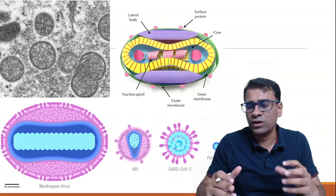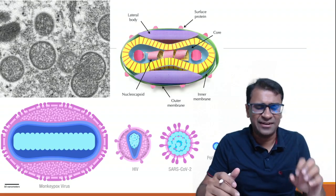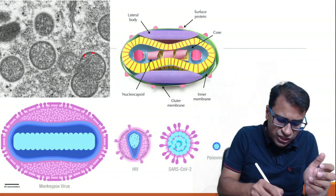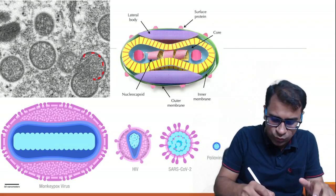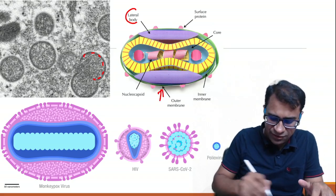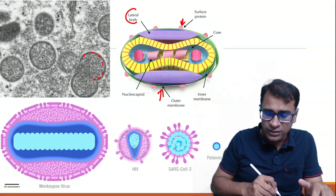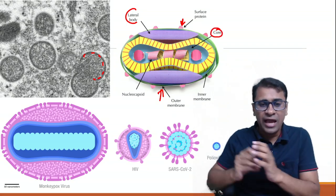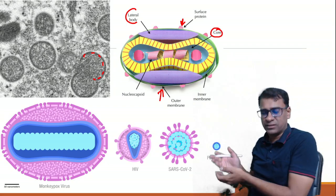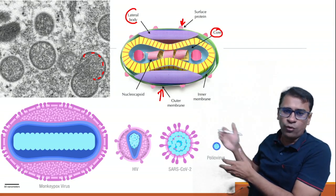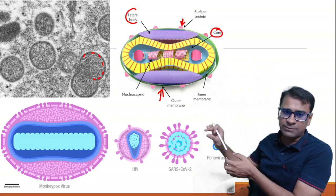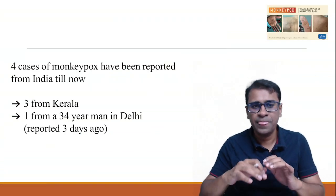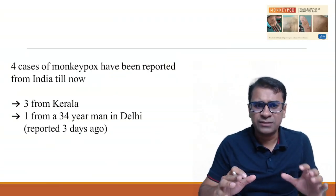It belongs to the category of viruses related to smallpox, which was largely eradicated long ago, and suddenly this has come back. The structure is a brick-shaped structure in electron microscopy, with an outer membrane, lateral body, surface proteins, and core proteins containing the nucleocapsid — again, it's a double-stranded DNA virus. For comparison, the monkeypox virus is notably large compared to poliovirus, SARS-CoV-2, and HIV. Four cases of monkeypox have been reported in India so far — three from Kerala and one from a 34-year-old man in Delhi.